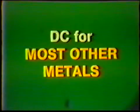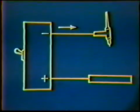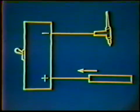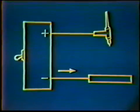Direct current is used on most other metals. A direct current system provides a reasonably steady current that causes electrons to flow only in one direction, from negative to positive. Direct current may be in one of two forms: direct current electrode negative, called straight polarity, or direct current electrode positive, called reverse polarity.